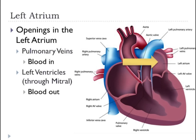The openings into the left atrium include the pulmonary veins, which let blood into the left atrium. And the opening out of the left atrium is into the left ventricle through something called the mitral valve. Again, we'll talk about valves in an entirely separate video.